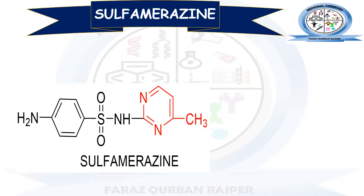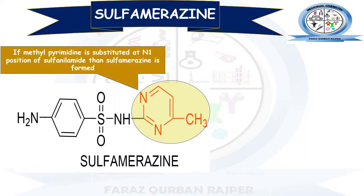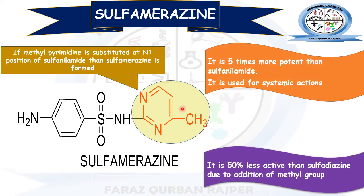The third derivative is Sulfamirazine. Sulfamirazine is the derivative of sulfanilamide in which it is substituted with the methylpyrimidine at the N1 position. Its structure is similar to Sulfapyrimidine; there is only an additional methyl group in the pyrimidine ring. This derivative is termed Sulfamirazine, formed by substitution of methylpyrimidine. It is 5 times more potent in comparison to sulfanilamide and is used for systemic actions, mainly systemic infectious diseases.